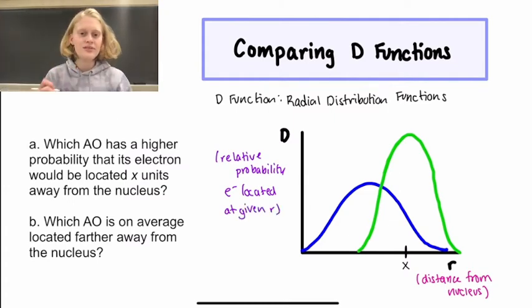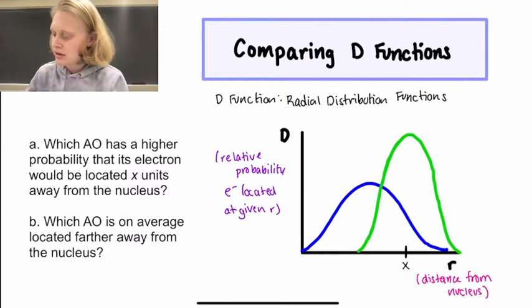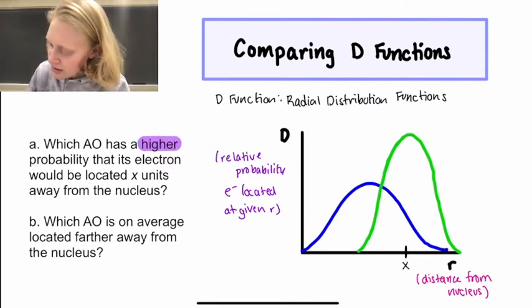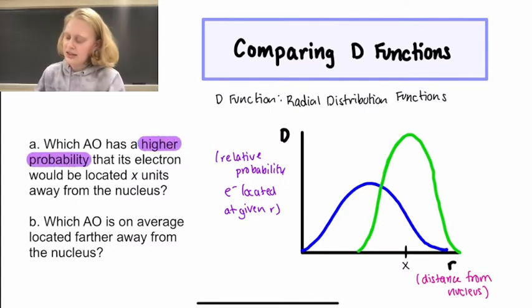Okay, and then we have some example questions to help us differentiate between these two axes. So the first question asks which AO has a higher probability that its electron would be located x units away from the nucleus.